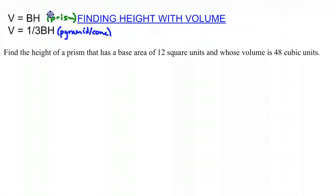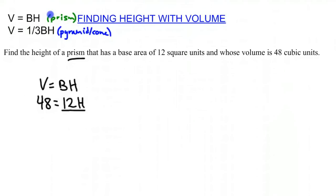12 square units and whose volume is 48 cubic units. We're going to use our prism equation: V equals base area times height. Our volume is 48 cubic units, our base area is 12 square units, and we're looking for our height. So we divide by 12 — 4 equals H, so our height is going to be 4 units.